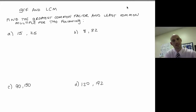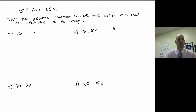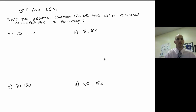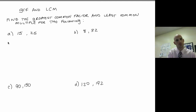Welcome back. Today we're going to talk about greatest common factor and least common multiple, or GCF and LCM. Part of what we do when we talk about GCF and LCM is we get into the habit of listing things. We're going to start by finding the greatest common factor and least common multiple of 15 and 25.